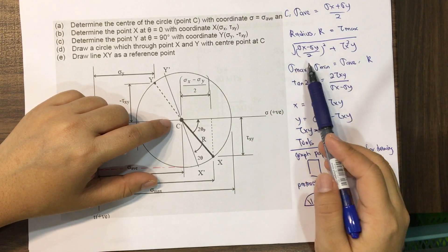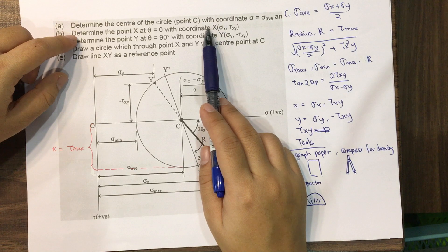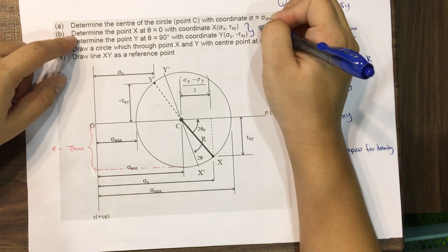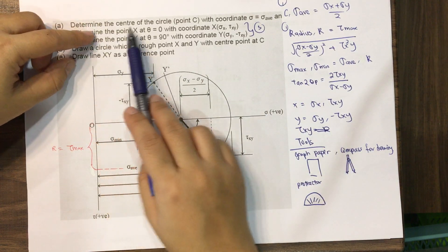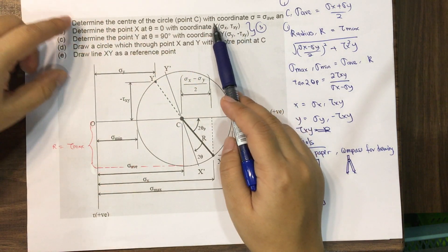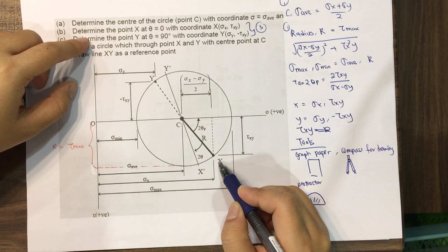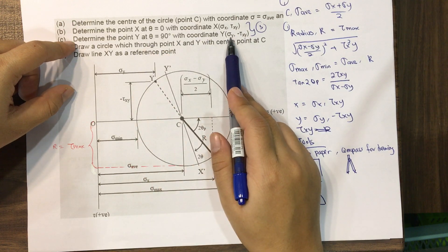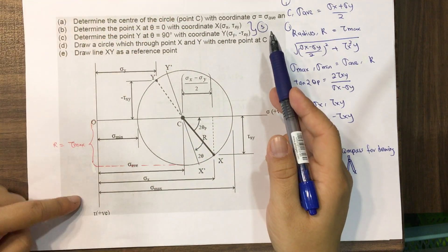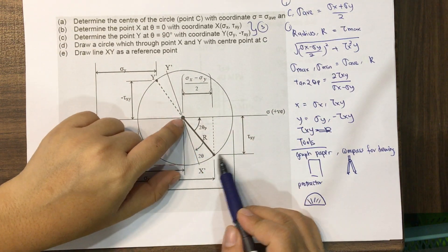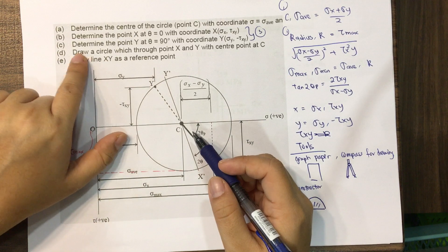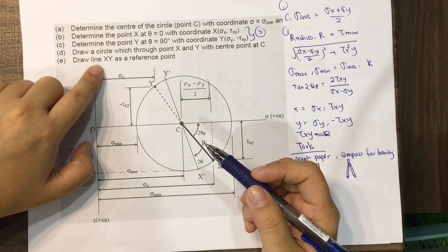You also need the coordinates of point X and point Y. Point X at theta equal to zero has coordinates (sigma_x, tau_xy), and point Y has coordinates (sigma_y, negative tau_xy) — note the negative sign on tau for Y. With the centroid, radius, and these two points you can correctly plot Mohr's Circle, then draw line XY as the reference line.